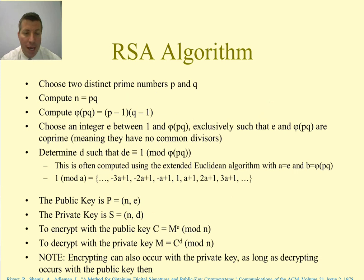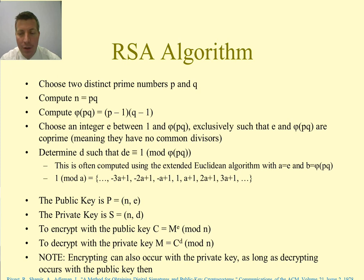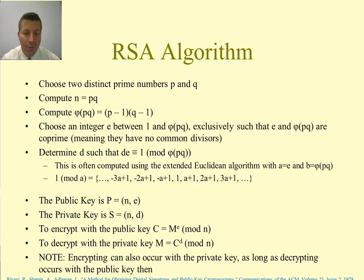Here is the RSA algorithm. Step 1: choose two distinct prime numbers p and q. Step 2: compute n = p × q. Step 3: compute φ(pq) = (p−1)(q−1). Step 4: choose an integer e between 1 and φ(pq) exclusively such that e and φ(pq) are co-prime — meaning their only common divisor is 1, so no other number divides both evenly.